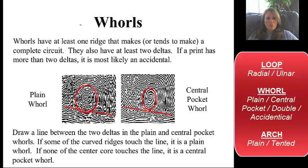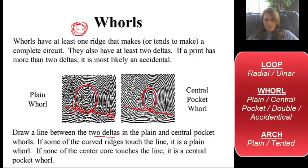Now let's go to the whorl — a whorl means kind of a circular pattern. I have two types: plain and central pocket. They look a lot like a spiral. The distinguishing factor between the two is determining the deltas. You need to find the deltas. We've got a delta here and a delta here. If I draw a line between the two deltas, and it is touching or going through the bottom curve of the whorl, then it's a plain. If it's not touching, it's a central pocket. So locate the deltas, find the curve, and draw a line between the two — a straight edge would help.